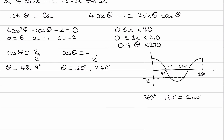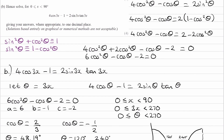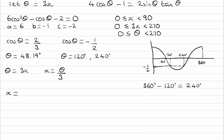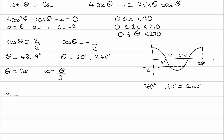So theta equals 48.19, 120, and 240. But theta equals 3x, and therefore x equals theta divided by 3. Dividing each by 3 gives our answers. The question asks for answers to one decimal place, so rounding: 48.19 divided by 3 gives 16.1 degrees, and the other two divided by 3 give 40 and 80 degrees. Those are the final answers.